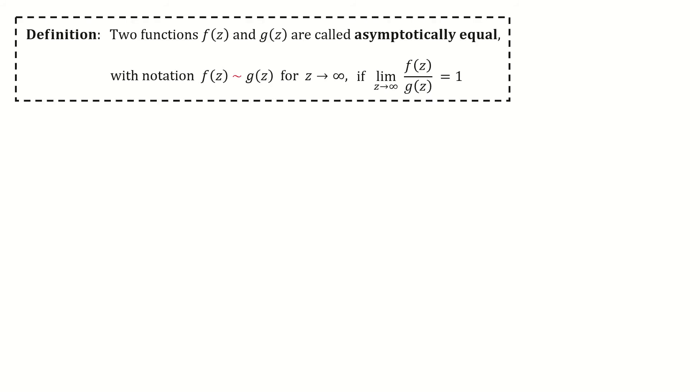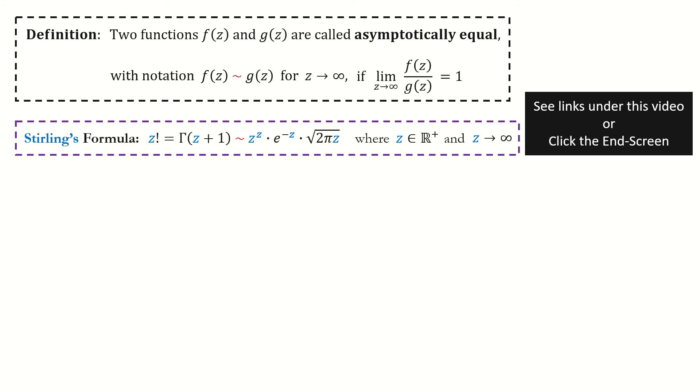Here is the definition of asymptotic equality. Recall Stirling's formula we derived in the last episode.